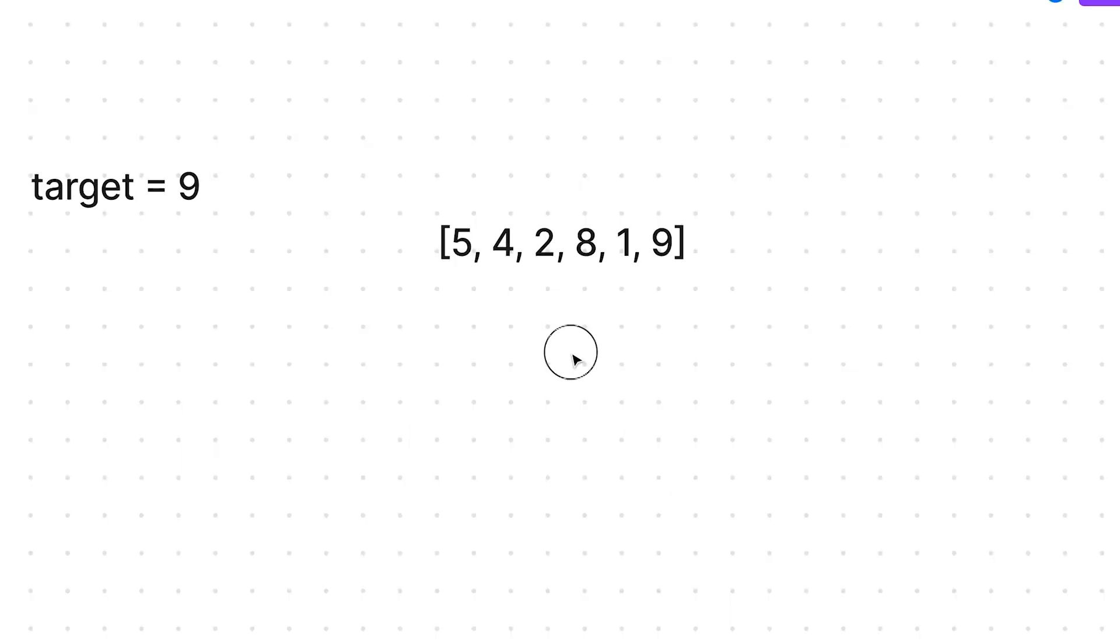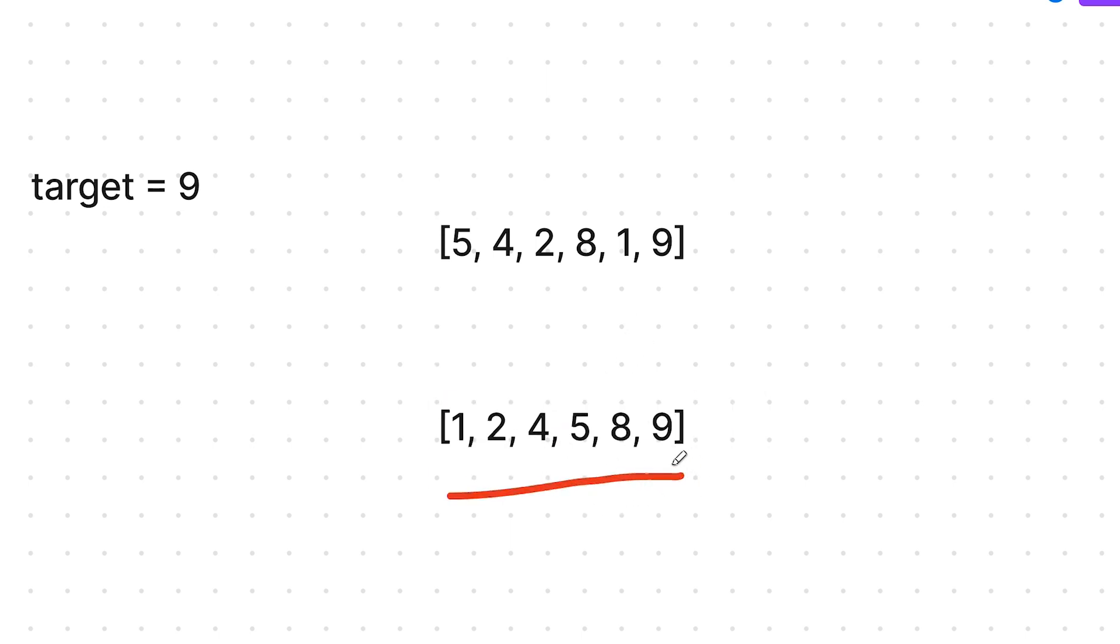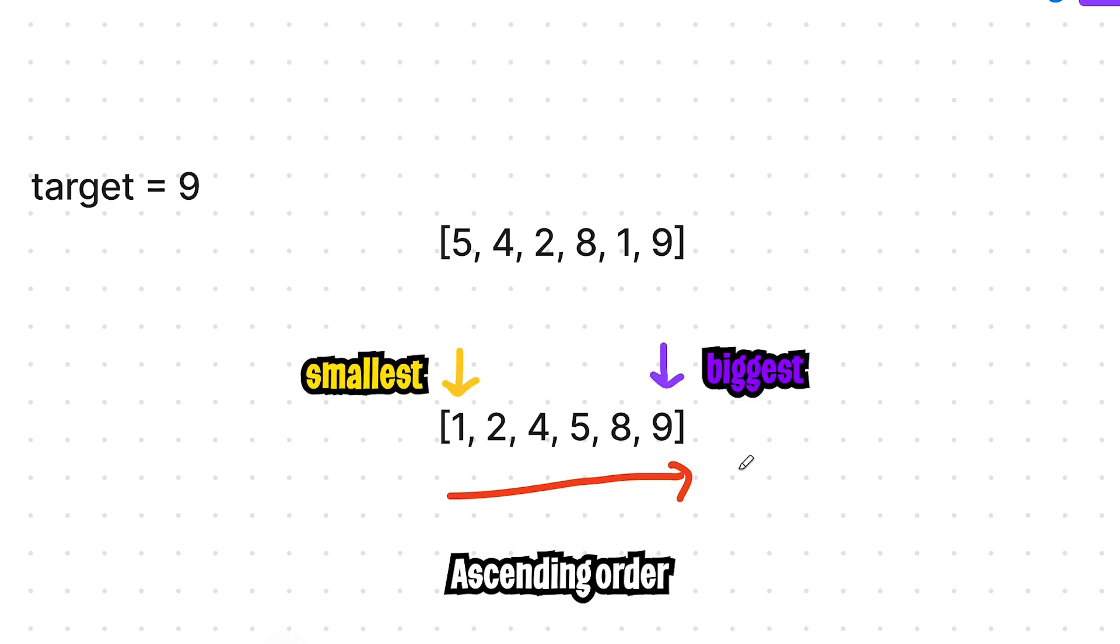So you're probably wondering, how does sorting even help us? Well, after we sort the list, we're going to get something that looks like this. Now the numbers are sorted in ascending order. But basically, the smallest number is on the left, and the biggest number is on the right. And now we can apply a technique called two pointers, where we basically keep track of two positions inside the list.